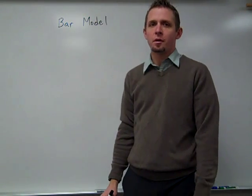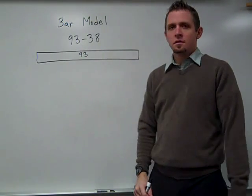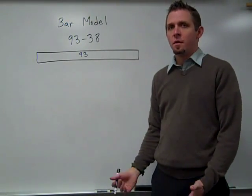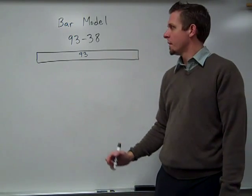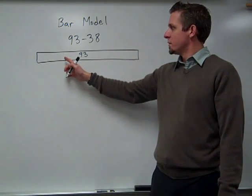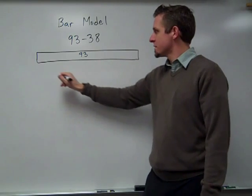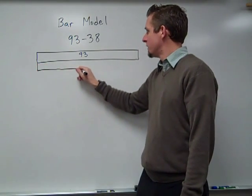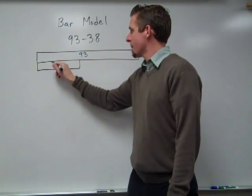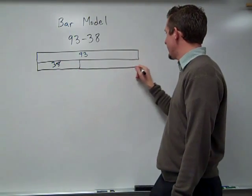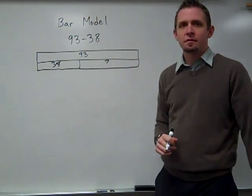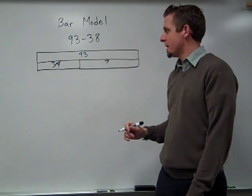This is what bar model would look like for this problem. So bar model is a very good model to use for this particular problem. We want to travel 93 miles to grandma's house. So far we've traveled 38 miles and we need to find this distance right here, how much we have left, how many more miles left to get to grandma's house.